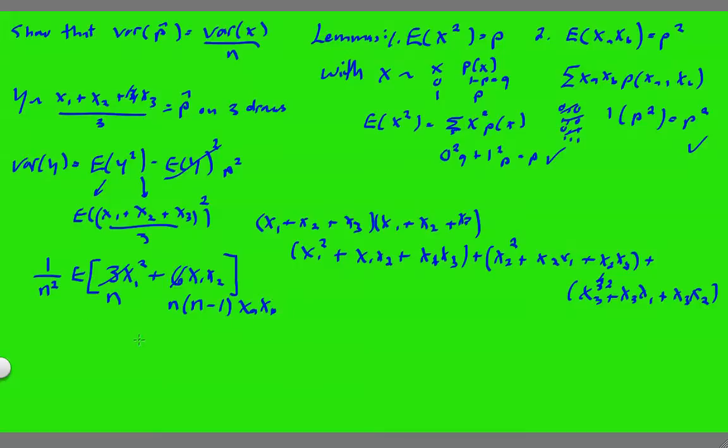So now we're just about home free. We get 1 over n squared, the expected value, as we know, distributes. So we would get n times the expected value of x squared, which we said is p, plus n times n minus 1, which is a constant, expected value of x_a, x_b, which is p squared.